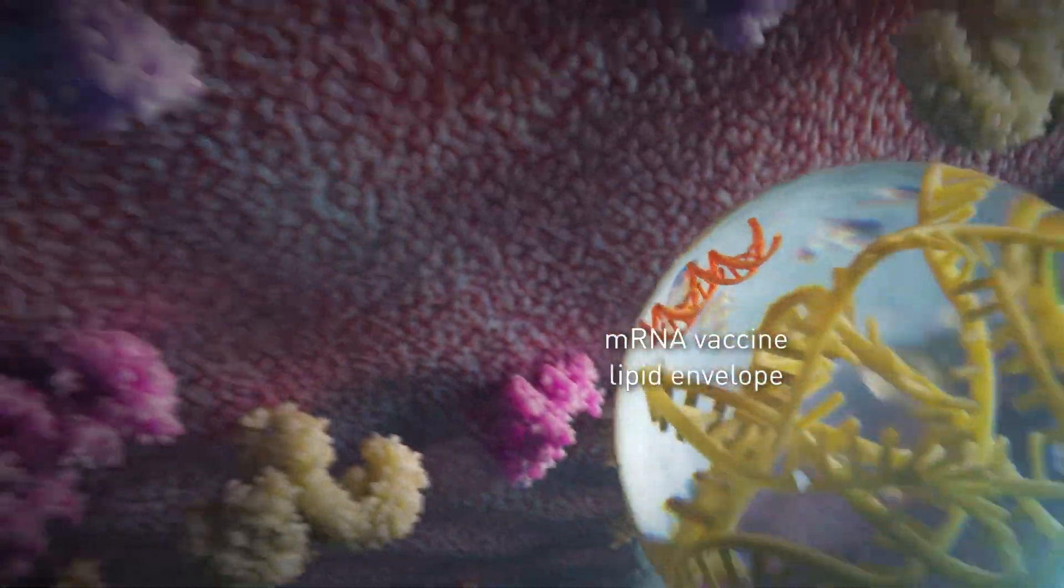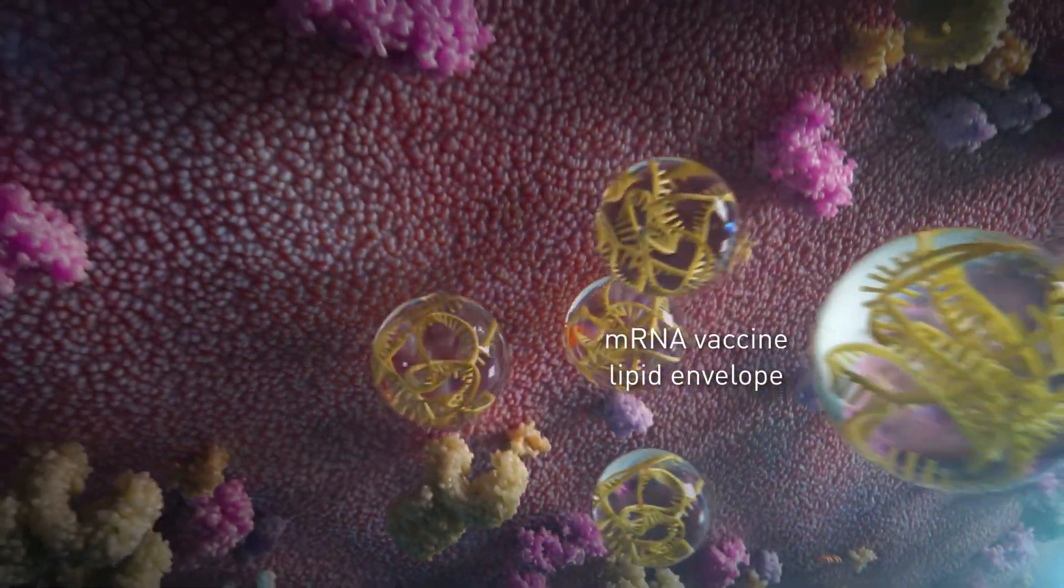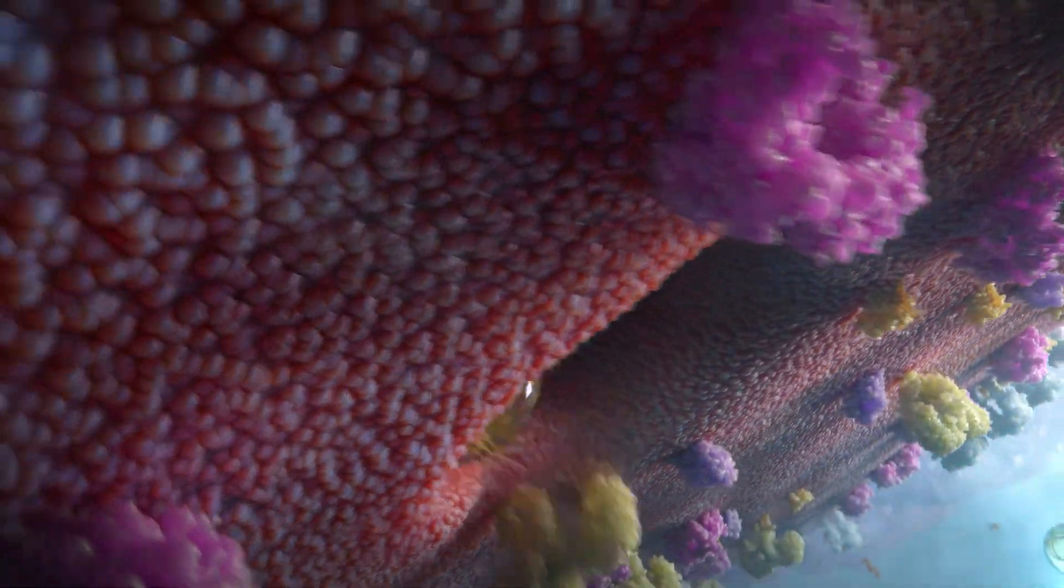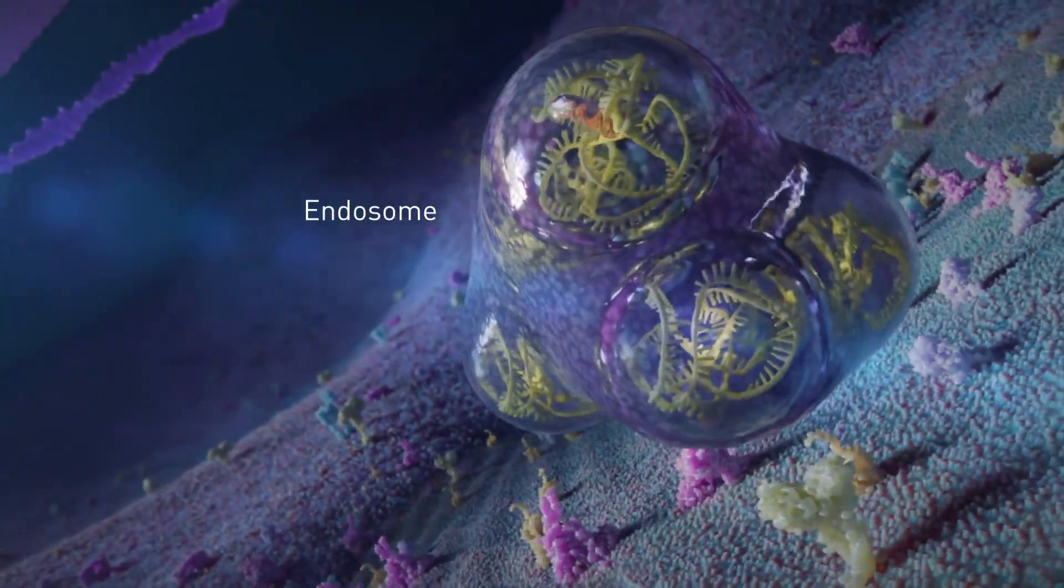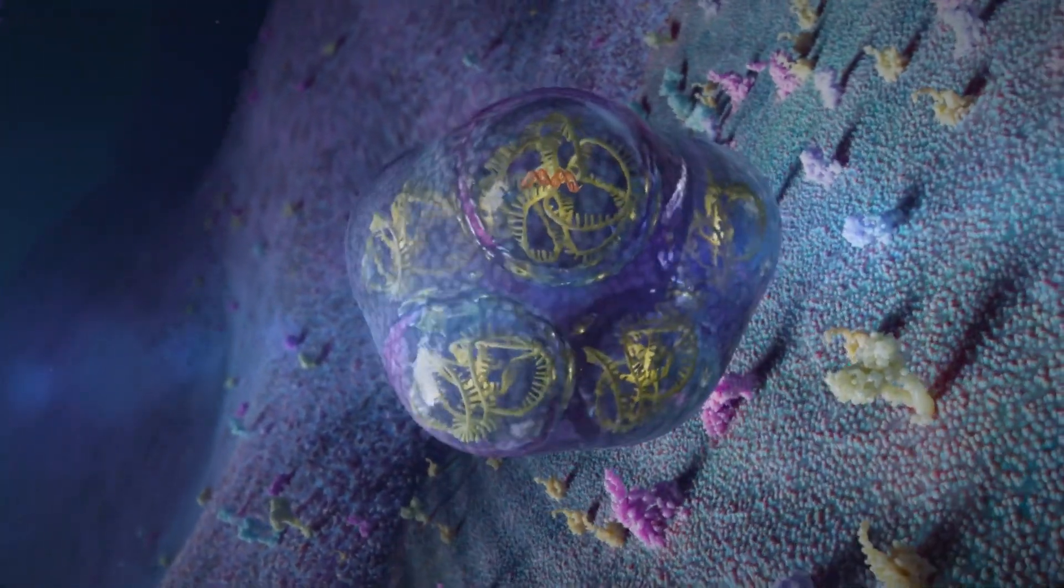It could pass through a cell's outer membrane inside an mRNA vaccine's lipid envelope. Upon entry, a special structure called an endosome immediately surrounds the envelope.